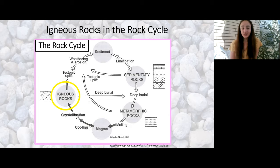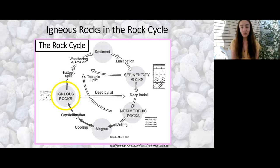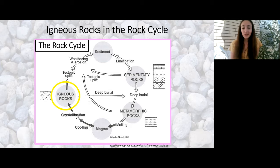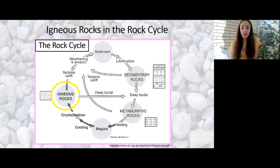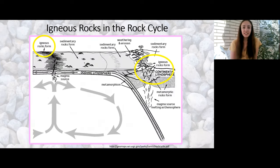Igneous rocks in the rock cycle. I included this diagram in my rock cycle video — if you haven't seen it, go watch that first. It's a good primer for these rock-type videos. This is where cooled magma becomes igneous rocks. You can see that igneous rocks are forming at the mid-ocean ridge to the left of the figure and the volcanic arc to the right.